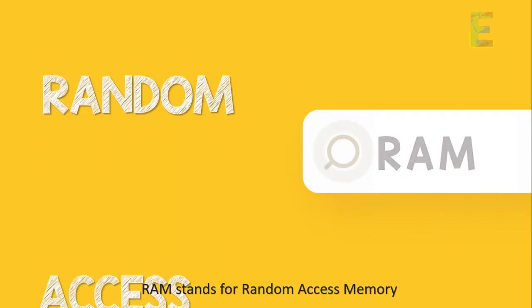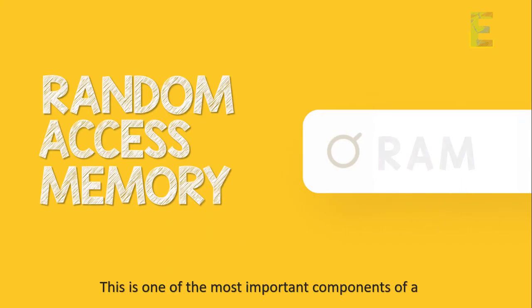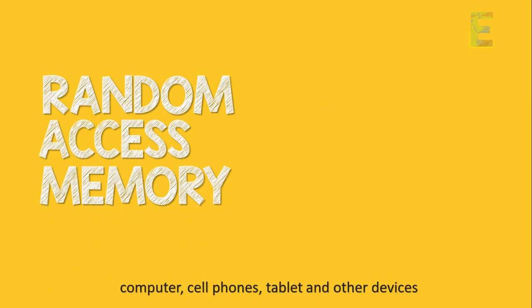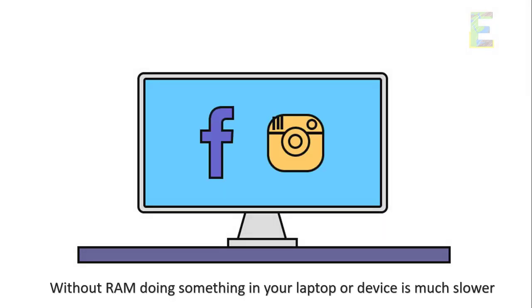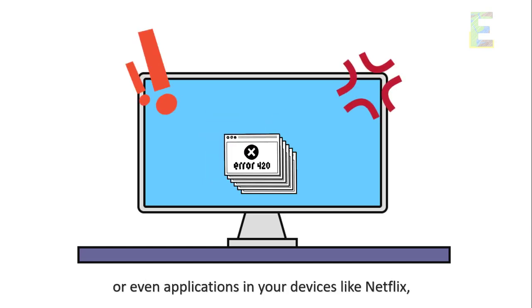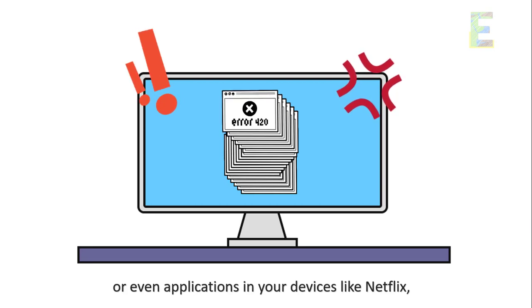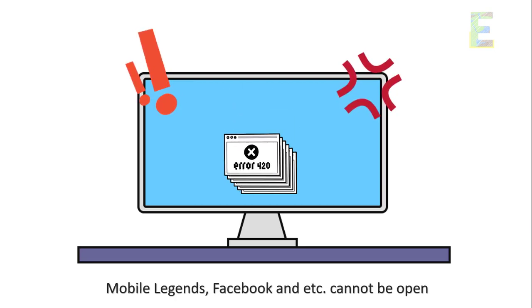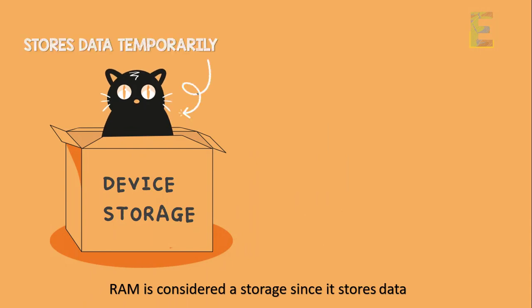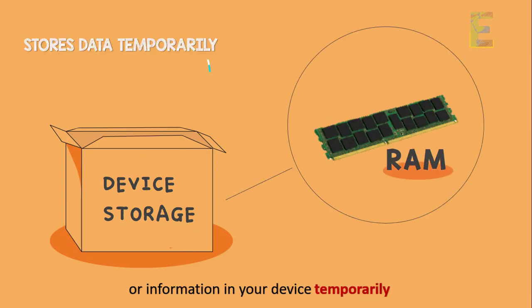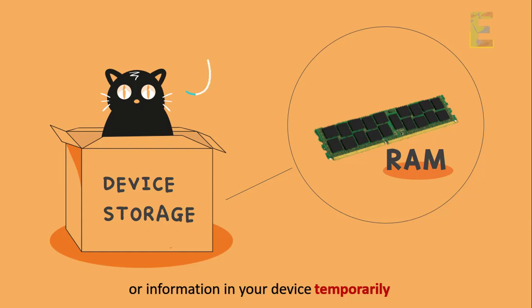RAM stands for Random Access Memory. This is one of the most important components of a computer, cell phone, tablet, and other devices. Without RAM, doing something on your laptop or device is much slower, or even applications like Netflix, Mobile Legends, Facebook, etc. cannot be opened. RAM is considered a storage since it stores data or information in your device temporarily.